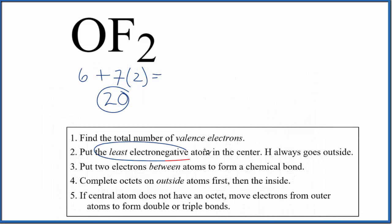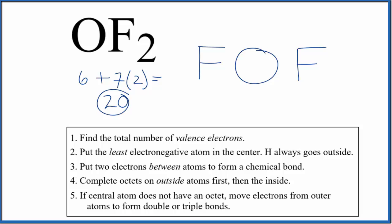We'll put the least electronegative element in the center. Fluorine is the most electronegative element on the periodic table, so oxygen goes in the center with a fluorine atom on either side. Next, we'll put a pair of electrons between the atoms to form a chemical bond, a covalent bond between the oxygen and fluorine.